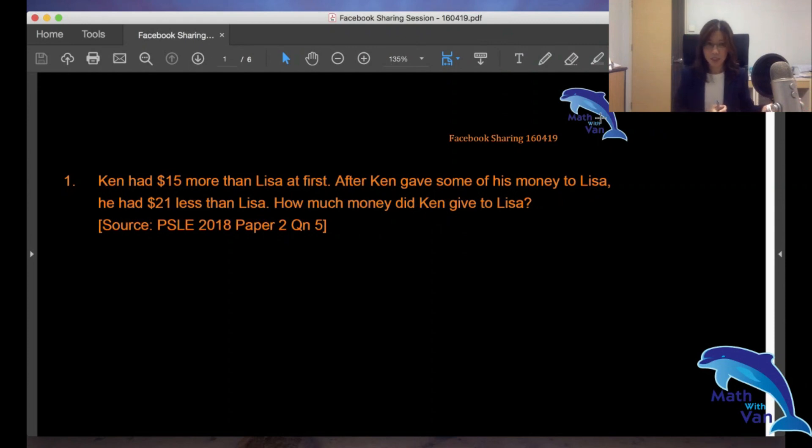Let's take a look at this question here. Ken had $15 more than Lisa at first. After Ken gave some of his money to Lisa, he had $21 less than Lisa. How much money did Ken give to Lisa?